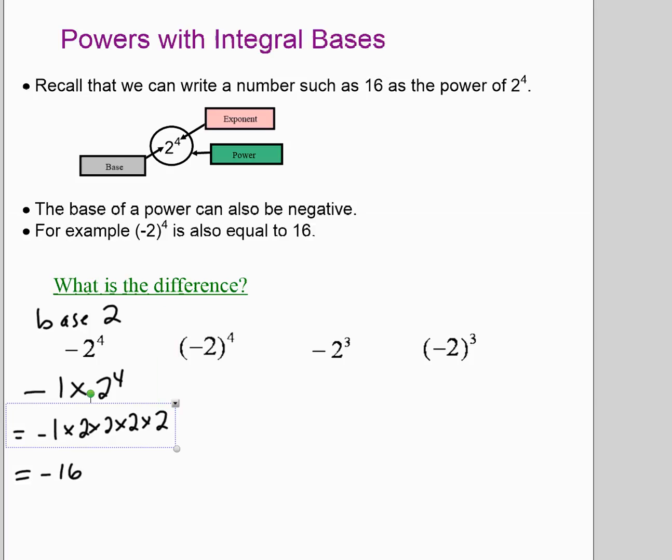What about the next one? Well, the next one, (-2)^4, is almost the same question but has brackets. In this case, the base is actually negative 2. When we follow BEDMAS and it says to do the exponents first, we're repeating the negative 2. This one is actually negative 2 times negative 2 times negative 2 times negative 2, which equals 16.